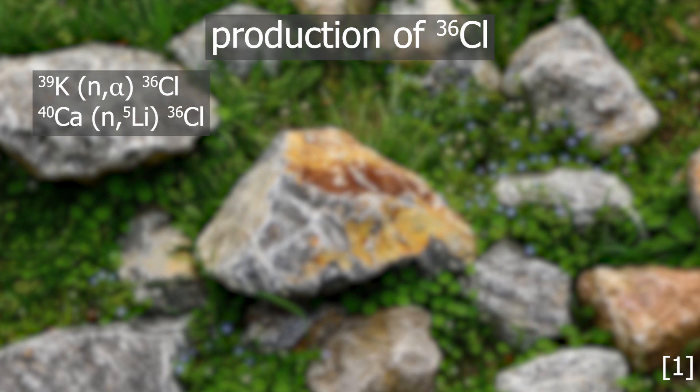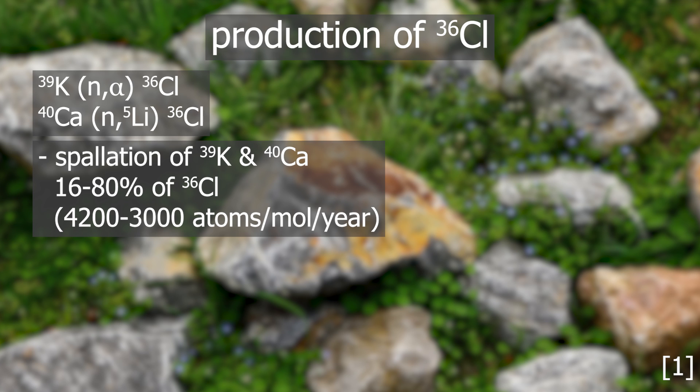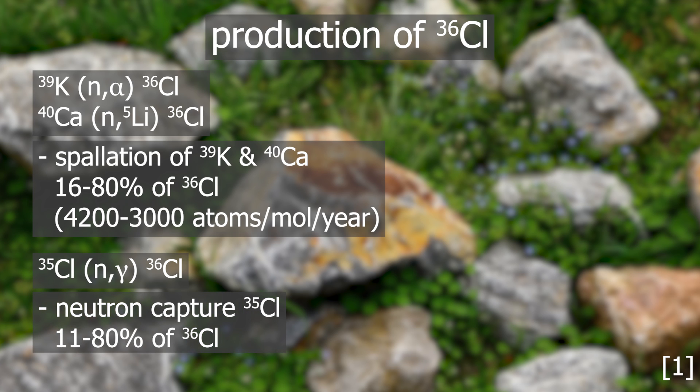These nuclear reactions contribute to 16 to 80 percent of Chlorine-36 production, corresponding to a production rate of 4,200 atoms per year per mole of Potassium-39 and 3,000 for Calcium. N-gamma contributes to 11 to 80 percent.